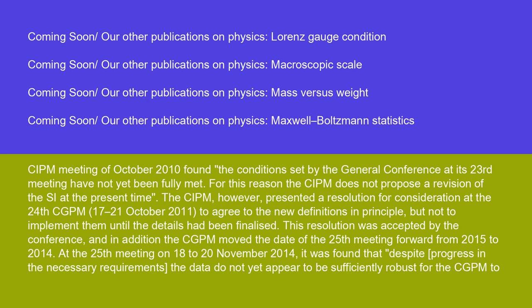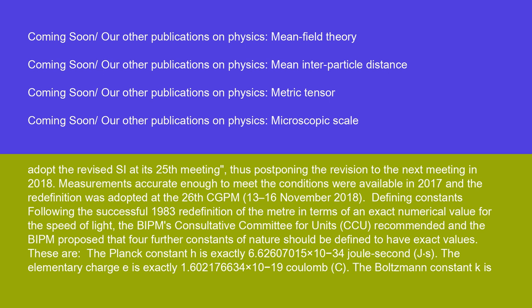At the 25th meeting on 18–20 November 2014, it was found that despite progress in the necessary requirements, the data did not yet appear sufficiently robust for the CGPM to adopt the revised SI, thus postponing the revision to the next meeting in 2018. Measurements accurate enough to meet the conditions were available in 2017, and the redefinition was adopted at the 26th CGPM, 13–16 November 2018.